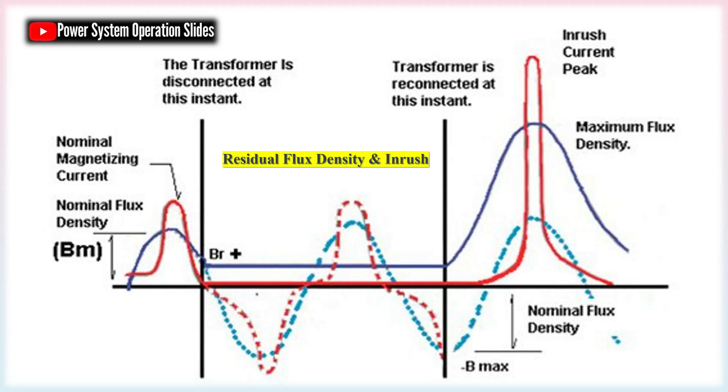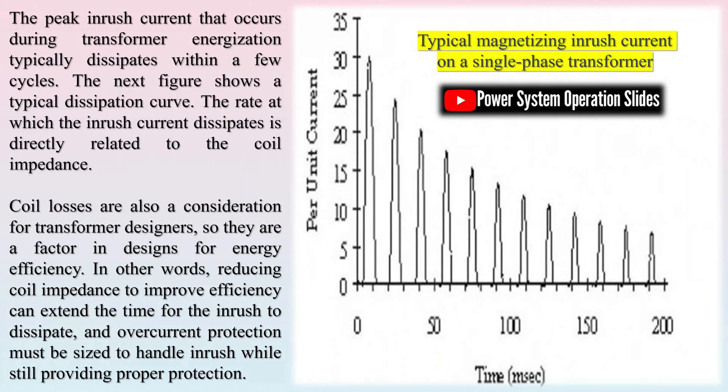Tripping of protective devices: If the inrush current is excessively high, it may cause circuit breakers or the transformer's fuses to trip. These protective devices are designed to detect and respond to abnormal current levels to protect the system from damage. In cases of severe inrush current, false tripping of protective devices may occur, resulting in unnecessary power interruptions. A fuse that accommodates the transformer's initial inrush current should be selected.